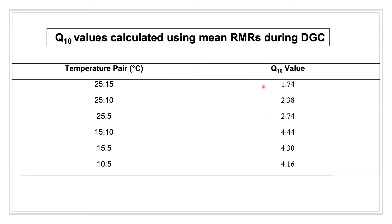This means that as temperature deviates further from normal, RMRs decrease at a larger rate. This may suggest that more extreme temperatures could possess an increased potential to negatively impact the RMR of this bumblebee species.